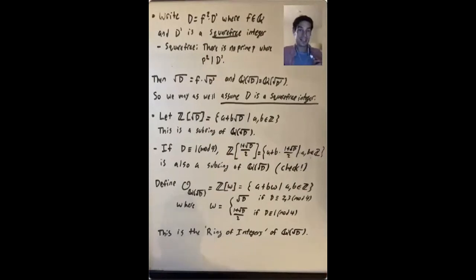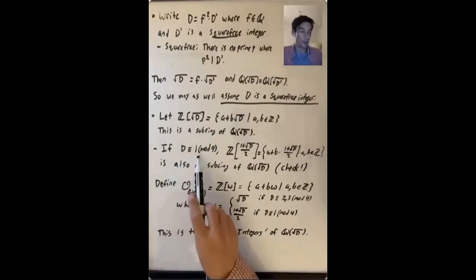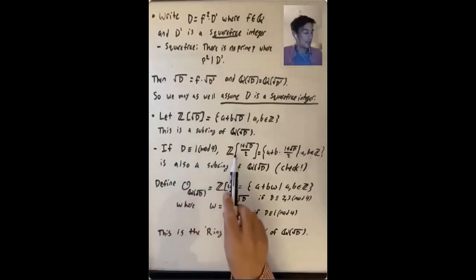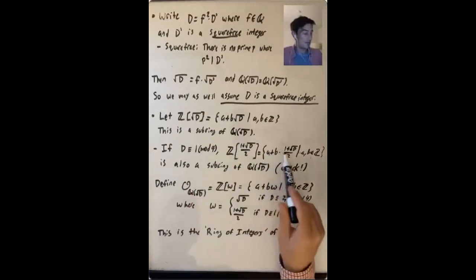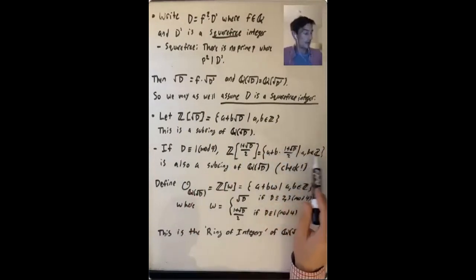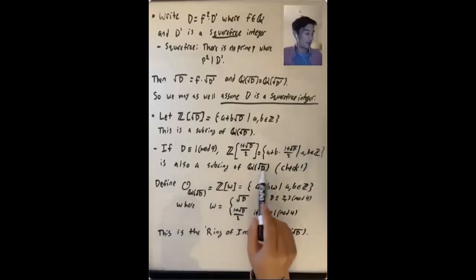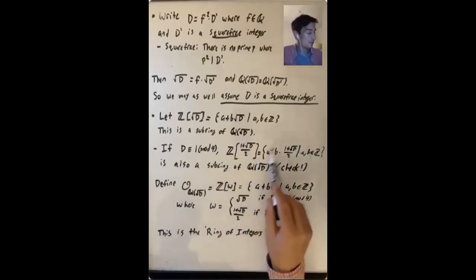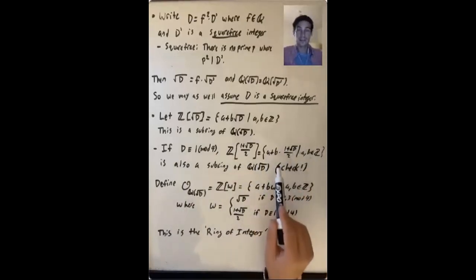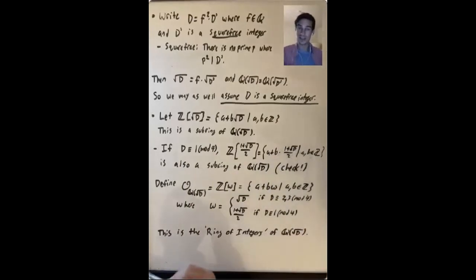Maybe a little less clear is that if D is 1 mod 4, then Z bracket (1 + √D)/2 — everything writable as A + B·(1 + √D)/2 where A and B are integers — is also a subring of Q adjoin √D. You need to check that multiplying two of these gives another one, and you really should verify that.